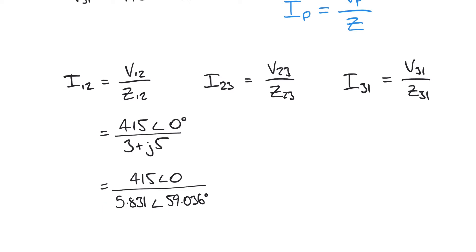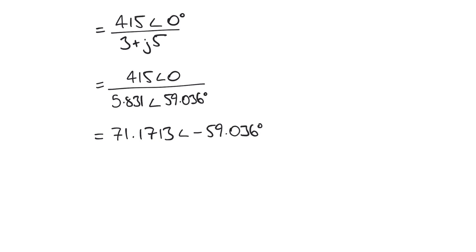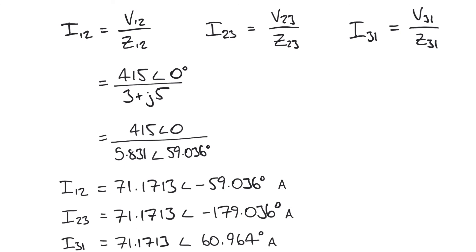As we mentioned in our previous video, we can perform division in polar form very easily — we divide the magnitudes and subtract the angles. So we divide 415 by 5.831 and subtract 59.036 degrees, giving us 71.1713 at an angle of minus 59.036 degrees in amps. Similarly, following the same approach, we get I2,3 and I3,1 as well.